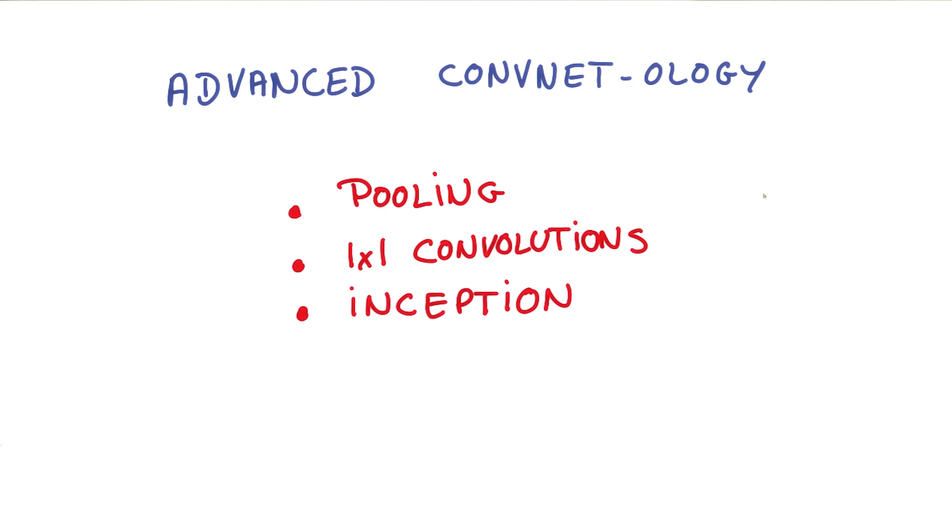Now that you've seen what a simple ConvNet looks like, there are many things that we can do to improve it. We're going to talk about three of them: pooling, one by one convolutions, and something a bit more advanced called the inception architecture.